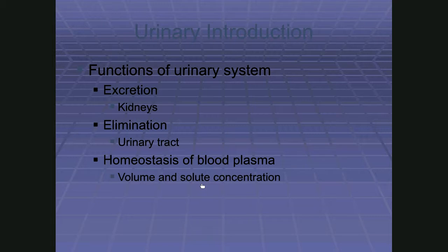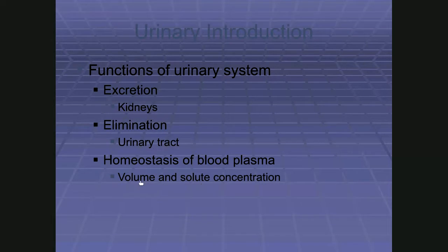We also regulate acid-base balance, which relates to the amount of hydrogen ions in the fluid. Too many hydrogens drops pH, creates a negative environment, and breaks things down. The kidney also helps regulate blood volume and blood pressure. Biologically active molecules like hormones and drugs are also filtered out because they shouldn't stay in the system indefinitely.